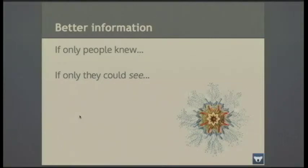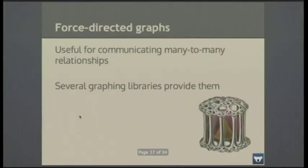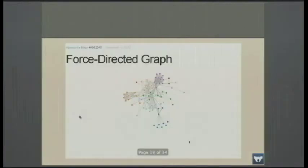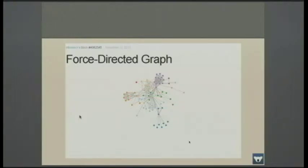The other thing I wanted to do was: if only people had better information, if only they could visualize some of this stuff, maybe that might make a difference. So I found force-directed graphs. It's a very good way of communicating many-to-many relationships. Several graphing libraries provide force-directed graphs, and that's what I've built on. Here's one example: characters out of Les Misérables, with lines representing interactions between those characters — obvious families, groups and clusters — and that makes a line in the diagram when they interact in the story.